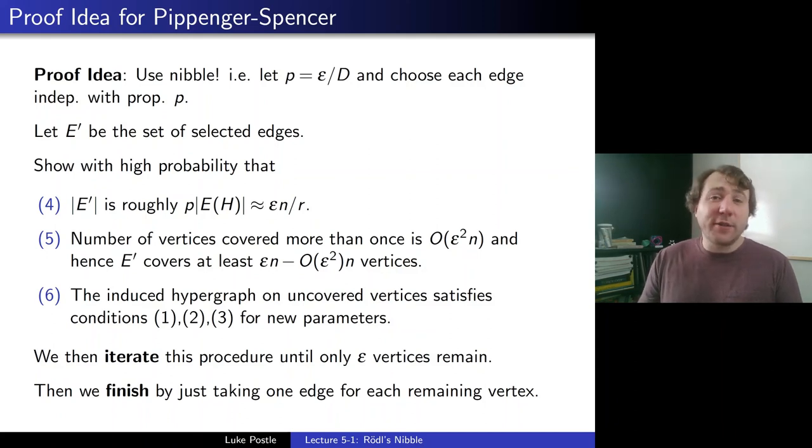So that's the proof idea for Pippenger-Spencer. Next class, we will actually go through this. And we're going to formalize the proof and work through the details using the second moment method. But today we learned about designs, about the Erdős-Hanani conjecture, about asymptotic designs, as was proved by Rödel. And that a key idea to the proof is this Rödel's nibble, that you should do a little bit at a time to build your desired object. So until next time, see you then!